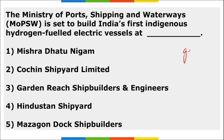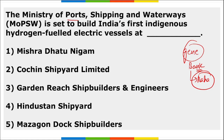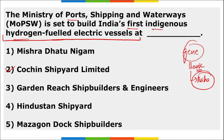India's first gene bank was set up for biodiversity conservation in Maharashtra. The Ministry of Ports, Shipping and Waterways is set to build India's first indigenous hydrogen-fueled electric vessel — a fuel cell electric vessel based on low-temperature proton exchange membrane technology — and it will be built at Cochin Shipyard Limited.